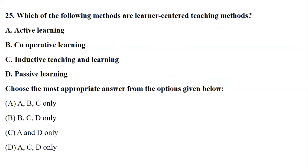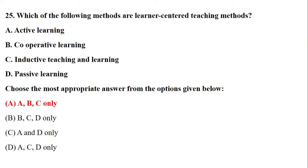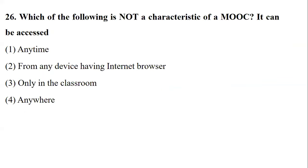Question twenty-five: which are learner-centered methods? Options include active learning, cooperative learning, inductive learning, and passive learning. Passive learning is clearly not learner-centered — eliminate it immediately. The right answer is option A, including active learning and cooperative learning. When concepts are clear, the elimination round becomes much easier.